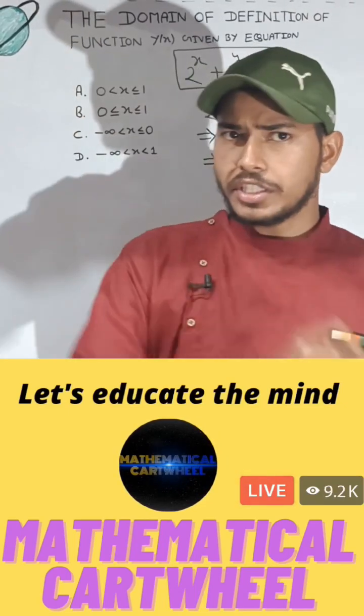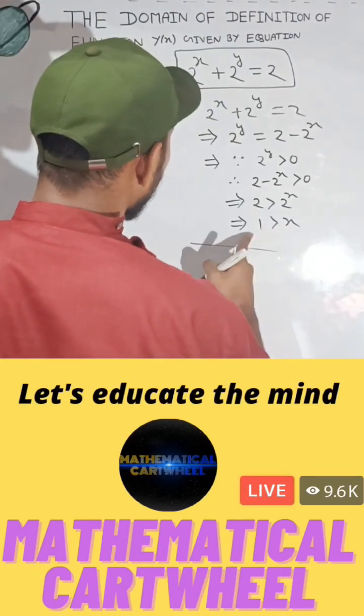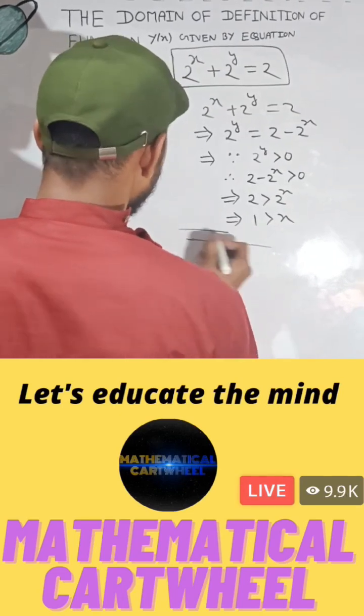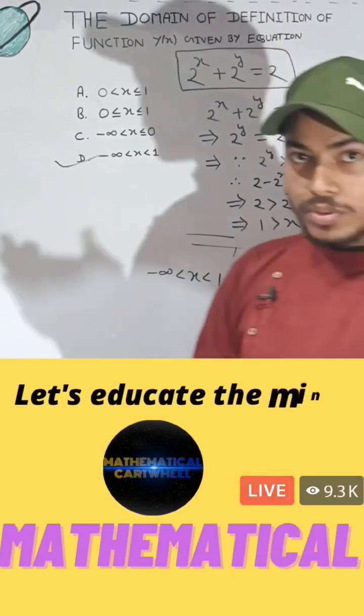So now you can use the number line method to identify your correct answer. You can simply write here 1. And now you can clearly observe that x is always less than 1. This area will be x. So in this area x will exist. So you can write here x is always less than 1 and greater than minus infinity. So option D is your correct option.